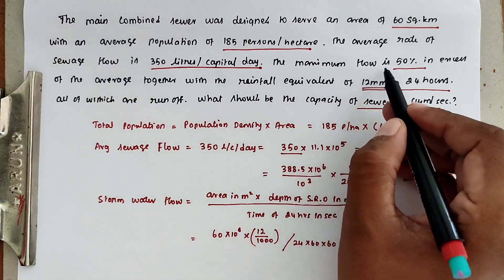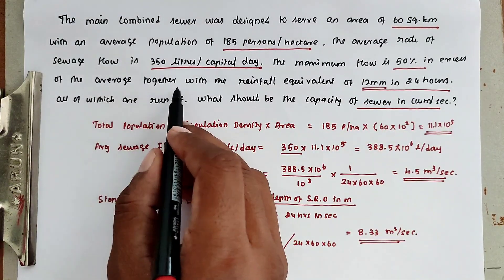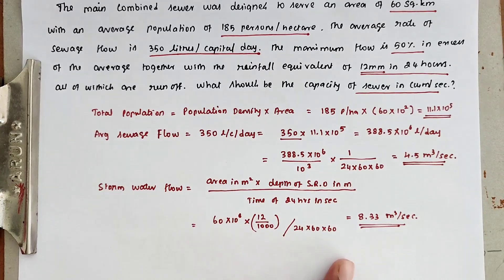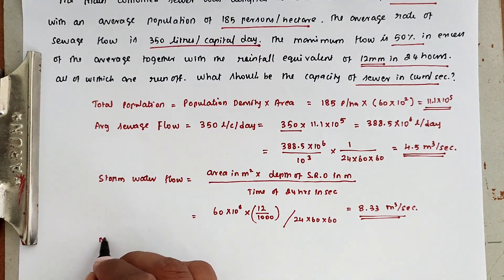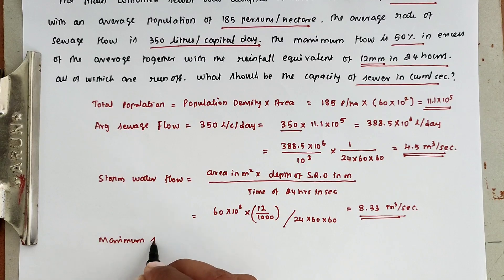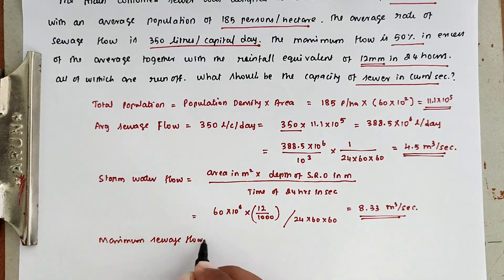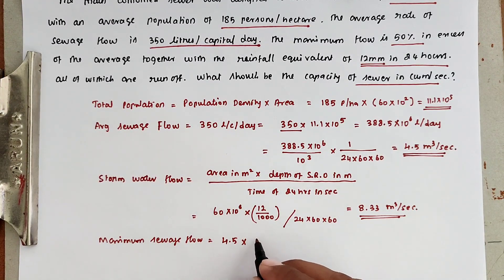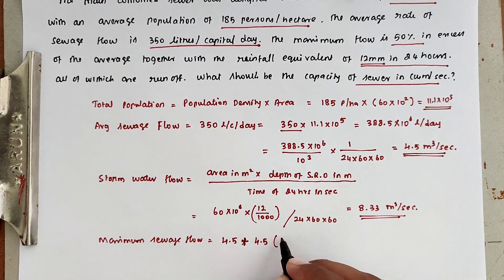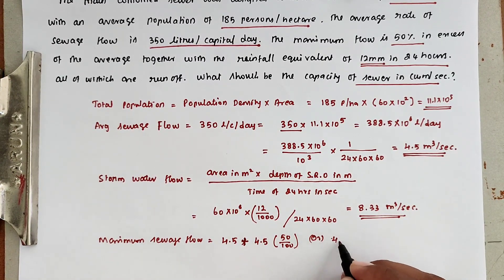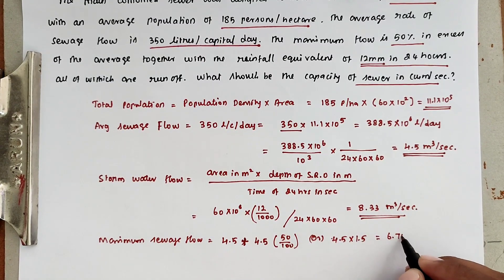Next, we consider the maximum flow, which is 50% in excess of average together with rainfall. Maximum sewage flow is 4.5 plus 4.5 into 50%, or we can directly multiply 4.5 into 1.5. Now we get the value of 6.75 meter cube per second.